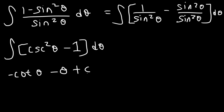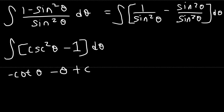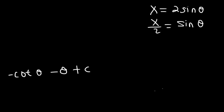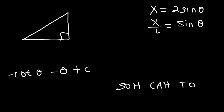This is the integral, but not with the appropriate variables — we started with x, so we have to change theta back into x. Recall that x is equal to 2 sine theta, so dividing both sides by 2 gives sine theta equals x over 2. We can make a right triangle using SOH-CAH-TOA: sine theta equals opposite over hypotenuse, so opposite to theta is x and the hypotenuse is 2.